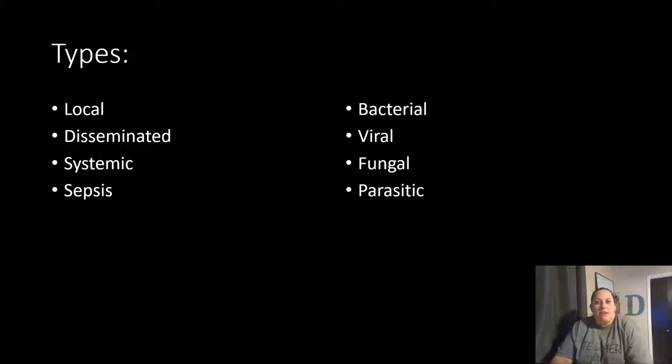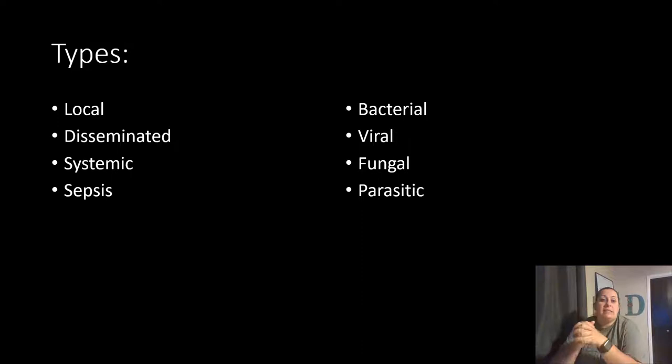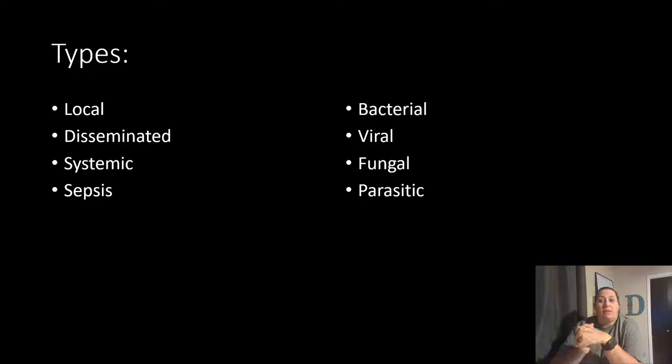There are different types of infections. A local infection is located in a specific area, limited to where it's at. If it starts to spread, we call it disseminated — spreading away from its point of origin. If it spreads throughout the whole body, we call it systemic, meaning multiple areas are fighting the invader. If the pathogen gets directly into the blood and causes the blood to become infected, we call this sepsis.